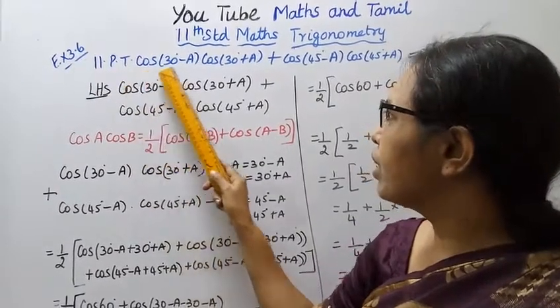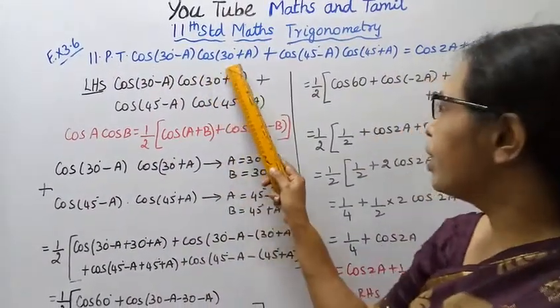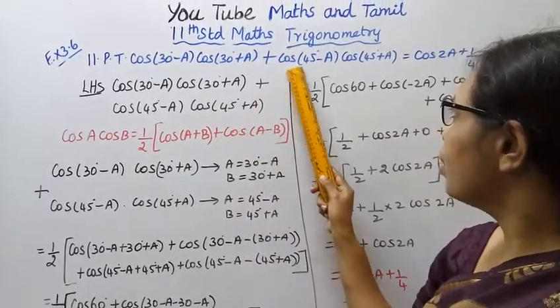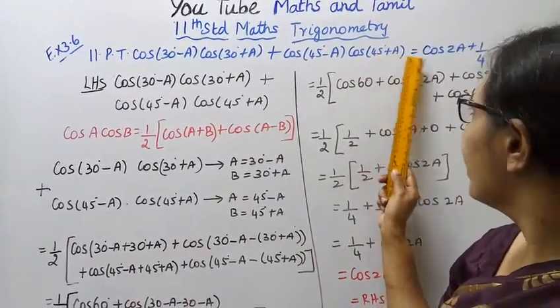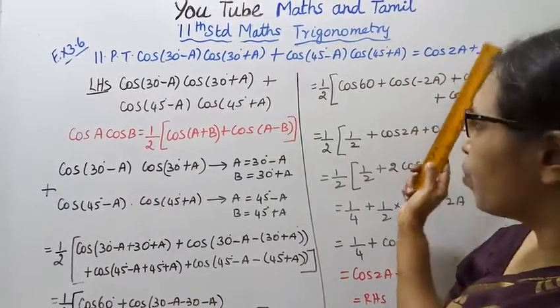Prove that cos 30 degree minus A into cos 30 degree plus A, plus cos 45 degree minus A, cos 45 degree plus A, equal to cos 2A plus 1 by 4.